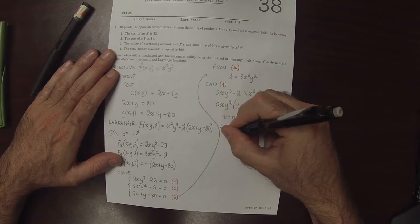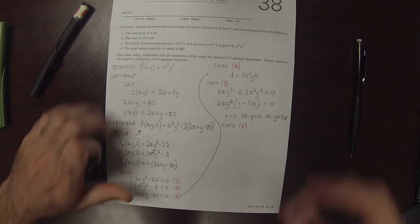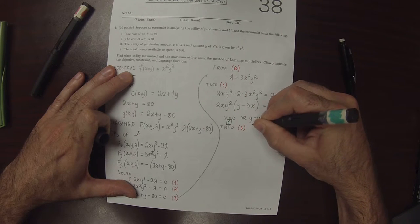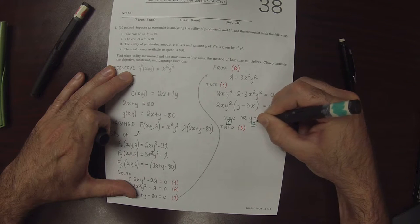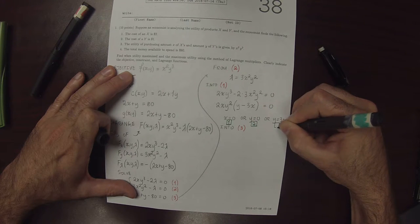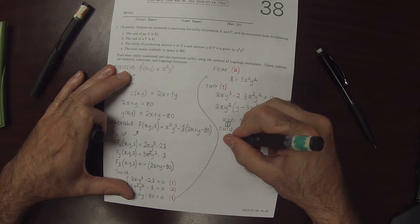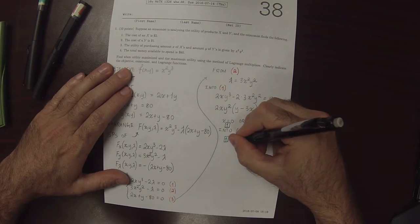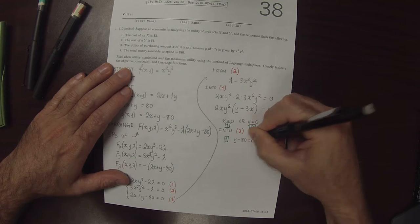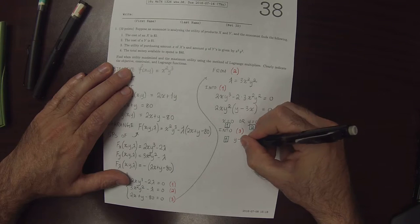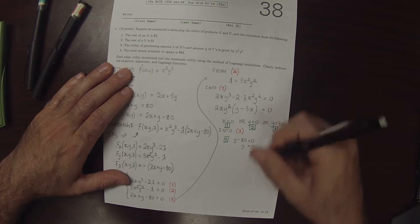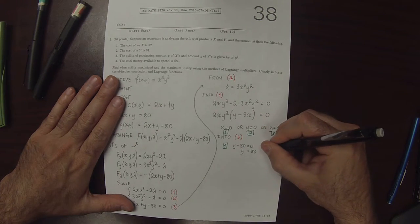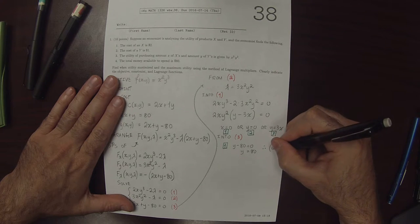If we use case 1, x equals 0, that's saying that y minus 80 equals 0, and therefore y is 80. That gives us the stationary point 0, 80.